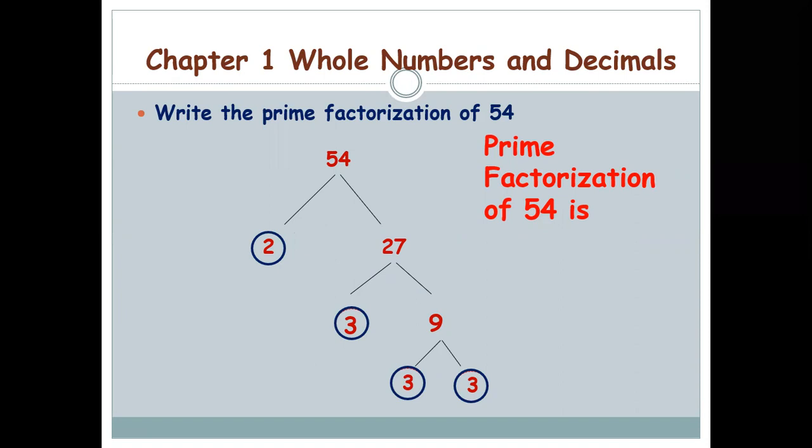In Part 1, I have included questions from Chapter 1 and Chapter 2. Chapter 1 is about whole numbers and decimals. One of the important concepts we learned is prime factorization — how to factorize a number using prime numbers. The number given is 54. Since 54 is an even number, you know 2 is a factor of all even numbers, so you will start with 2: 2 times 27 is 54.